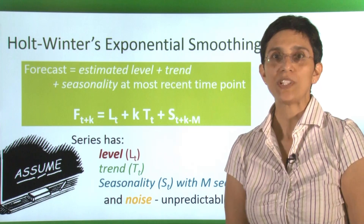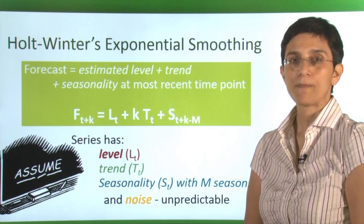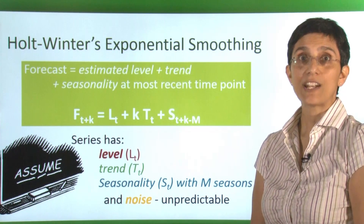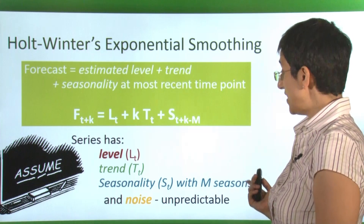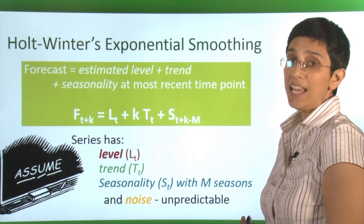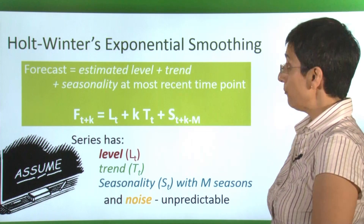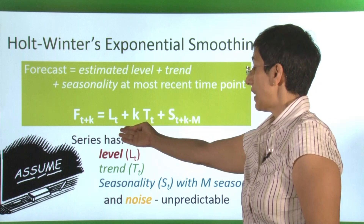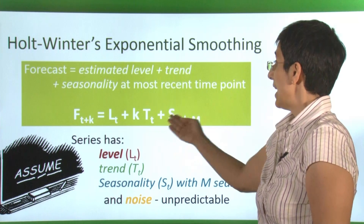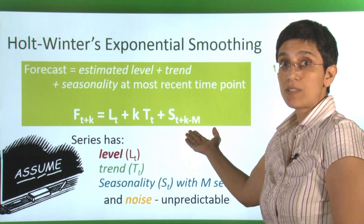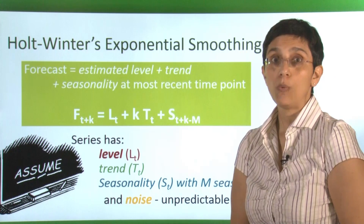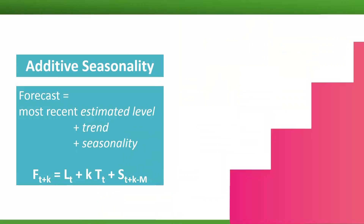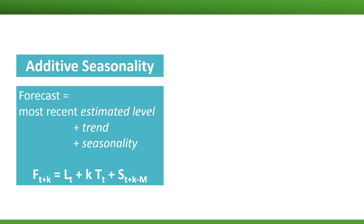Here is what the Holt-Winters exponential smoothing looks like. The assumption is that our series contains level, trend, seasonality with m seasons, and of course noise. Our forecasting equation now combines estimates of our level, trend, and the seasonal components. You can see that this is an additive model where we're using plus signs. The forecasting equation can be adjusted to incorporate either additive or multiplicative trend and seasonality.